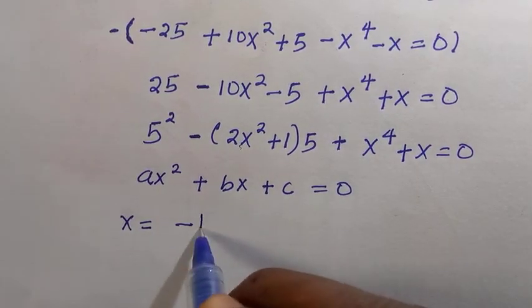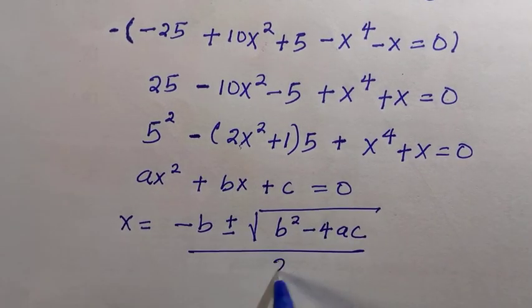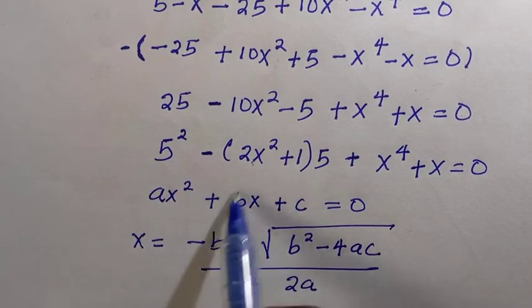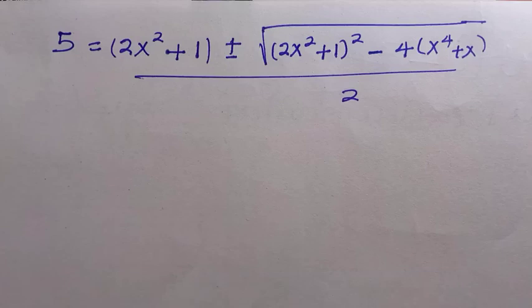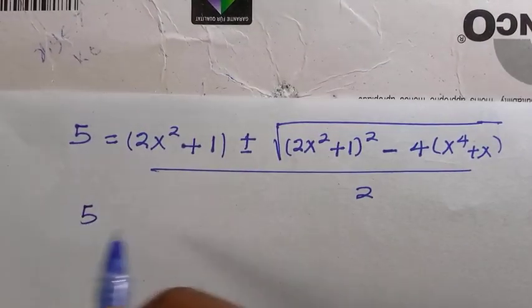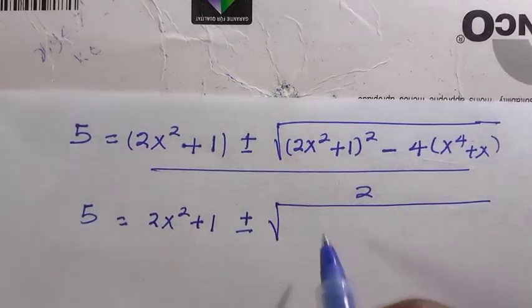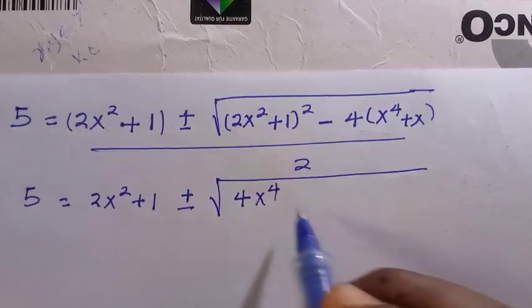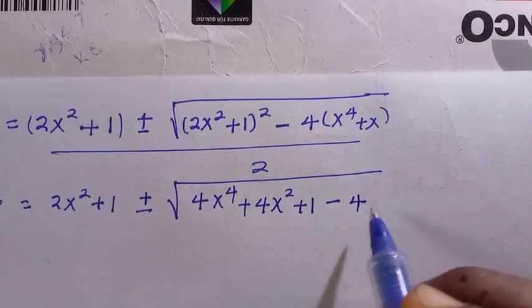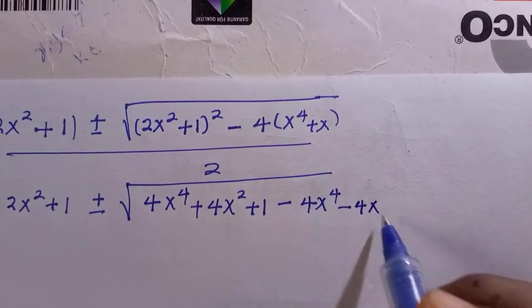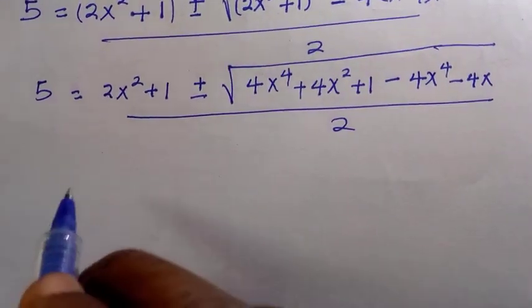Plugging into the quadratic formula — b² minus 4ac divided by 2a — with a equal to 1, we get: 5 equals 2x² plus 1, plus or minus the square root of 4x⁴ plus 4x² plus 1, minus 4x⁴ minus 4x, all divided by 2.